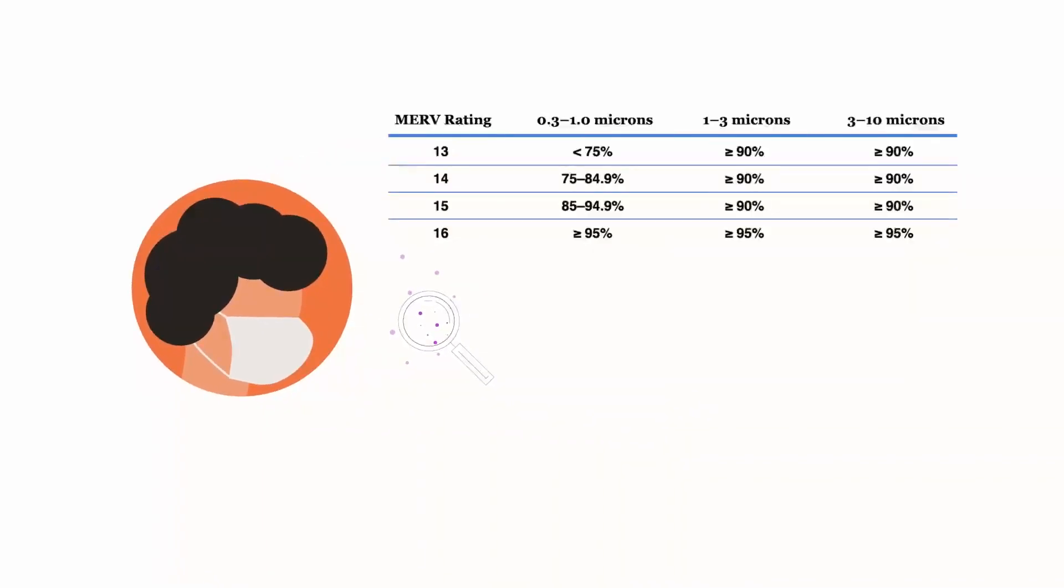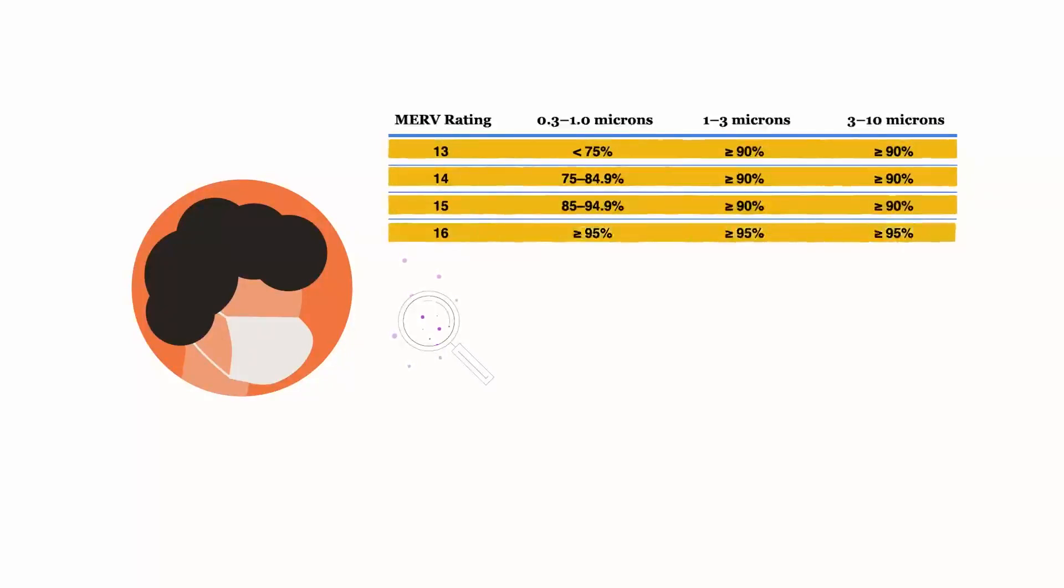Unfortunately, an infected person can emit aerosols containing SARS-CoV-2 in a wide range of sizes, from hundreds of microns, which is the width of a human hair, down to tens of nanometers, or 10 times smaller than a single red blood cell. These smaller respiratory aerosols require higher efficiency MERV ratings, such as MERV 13 or higher, in order to increase the likelihood of removing the SARS-CoV-2-laden aerosols.